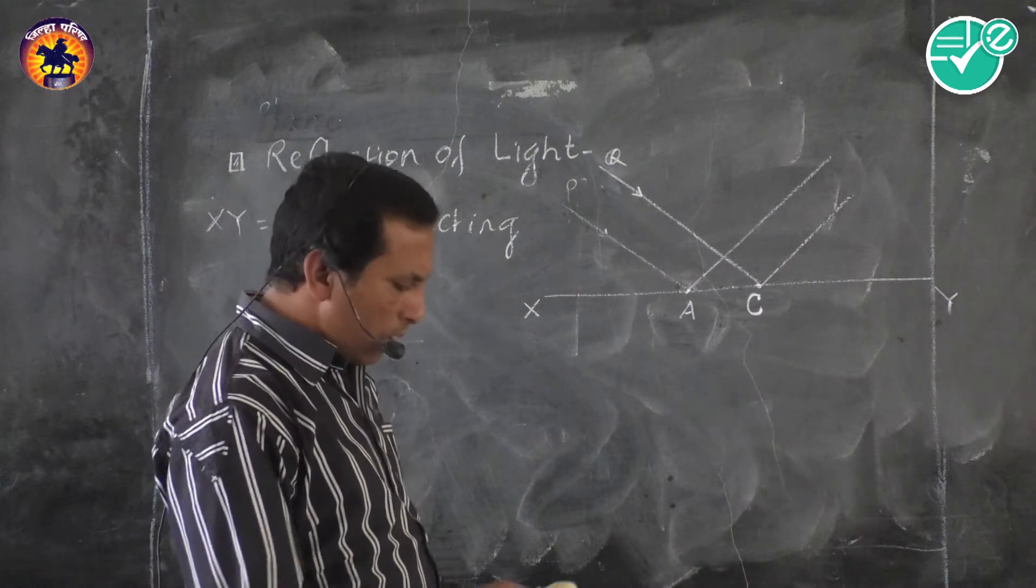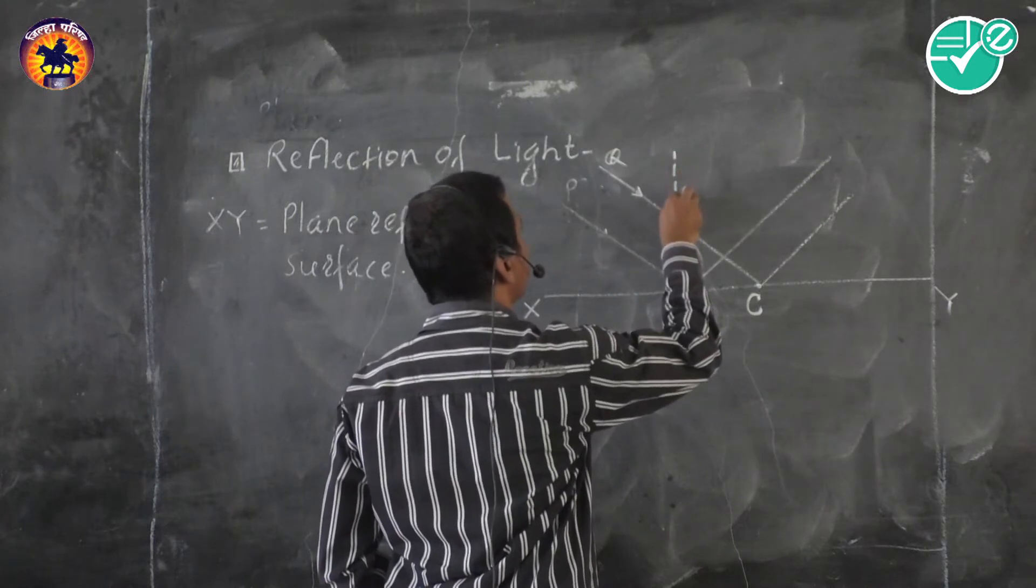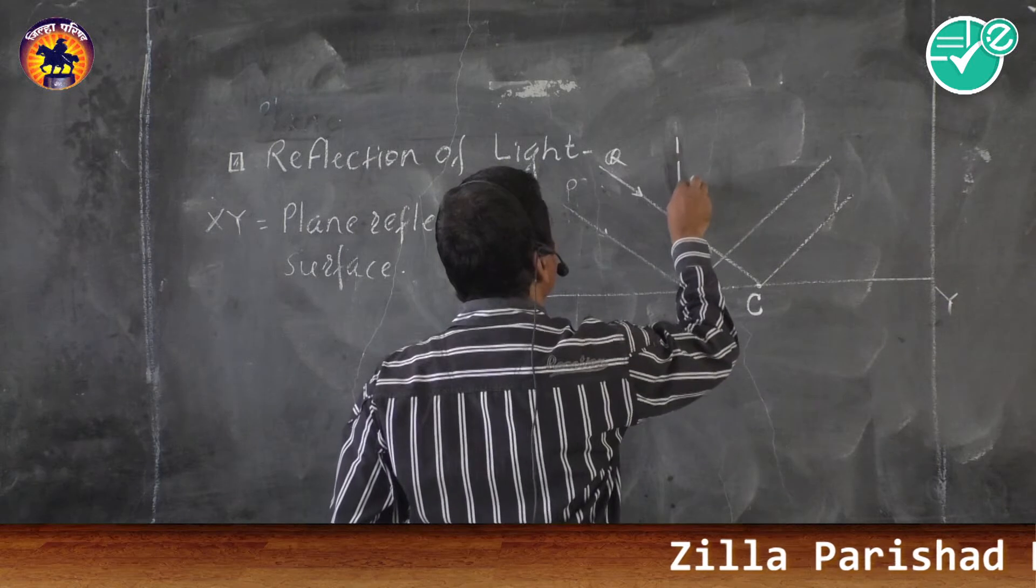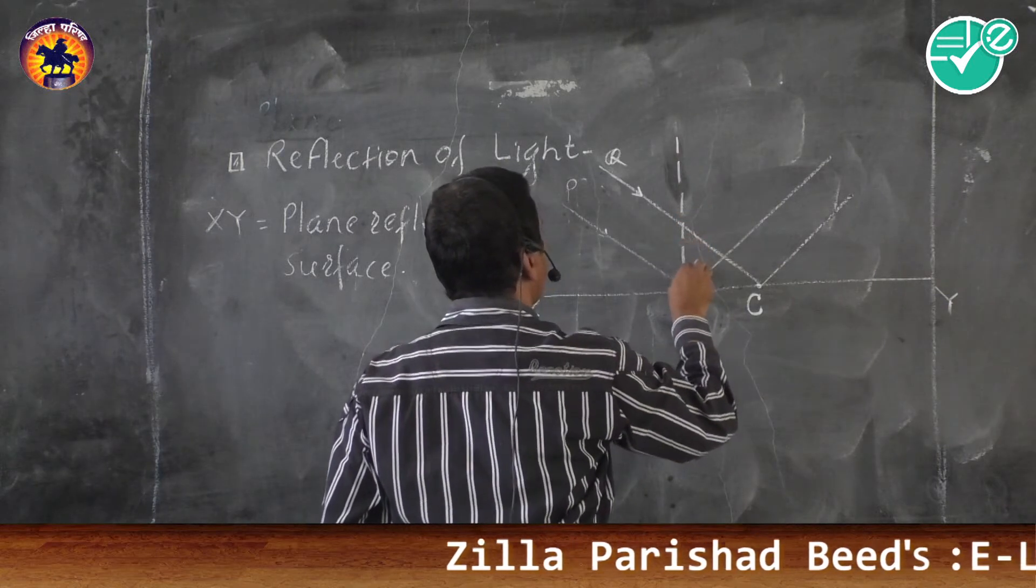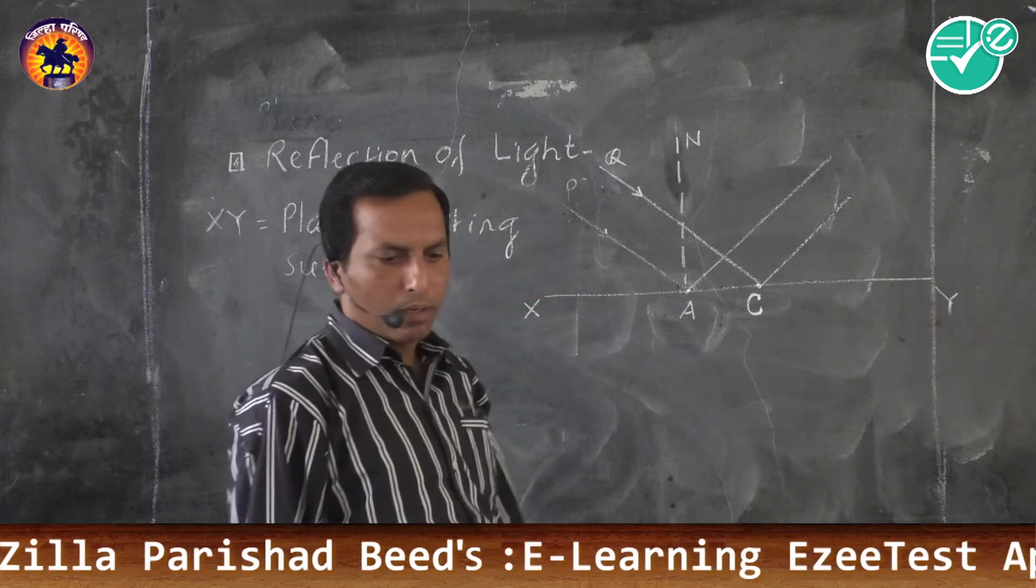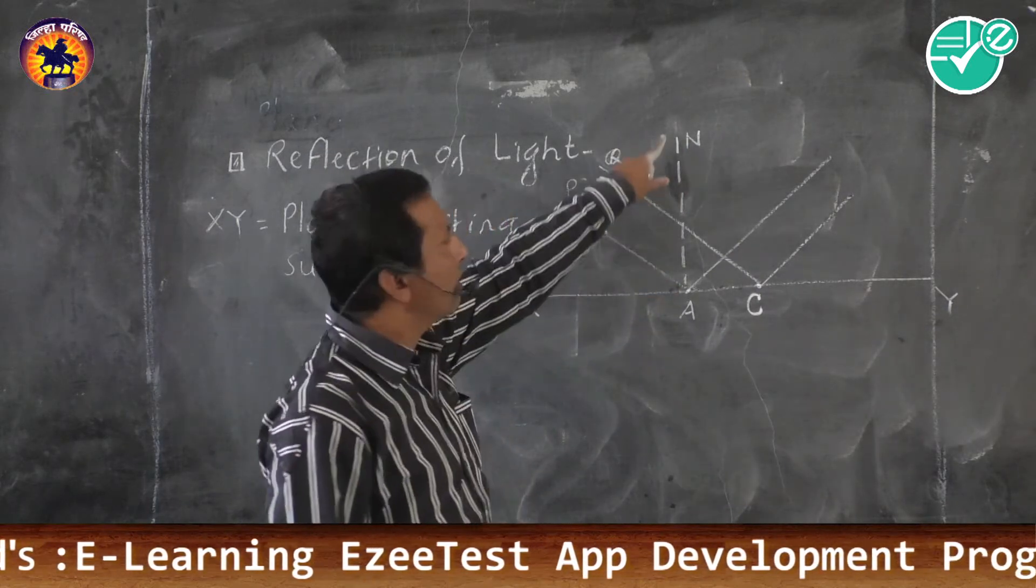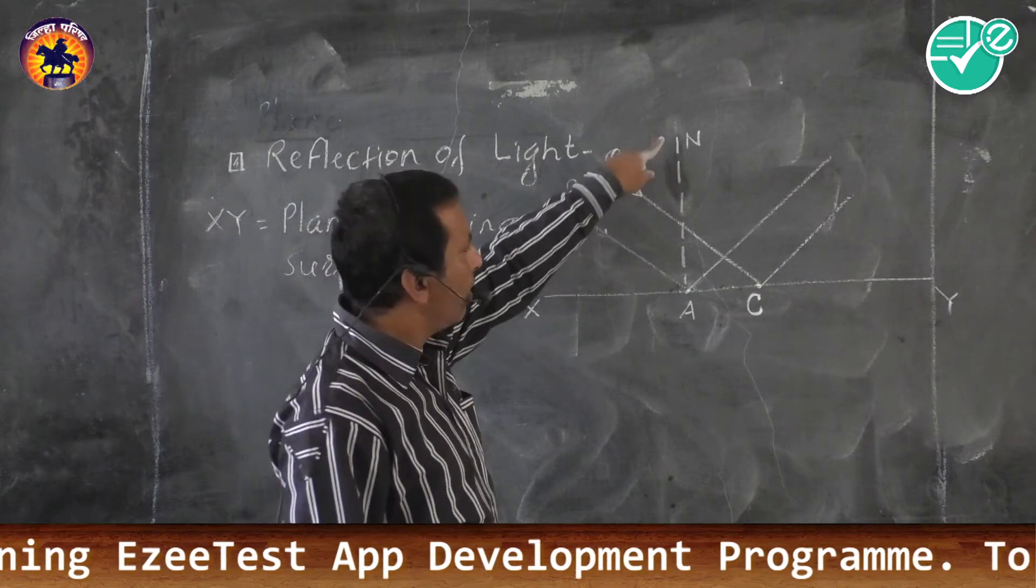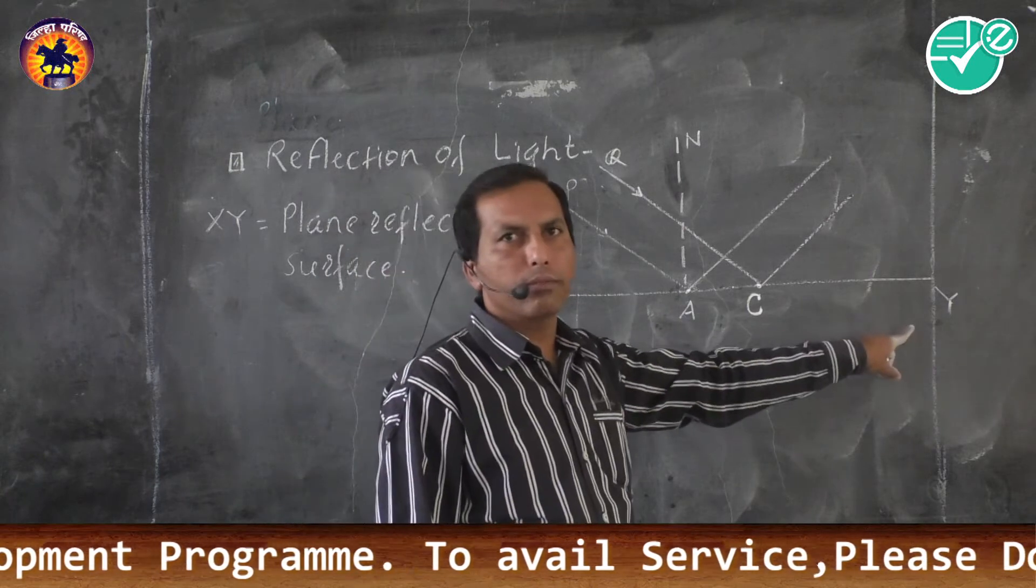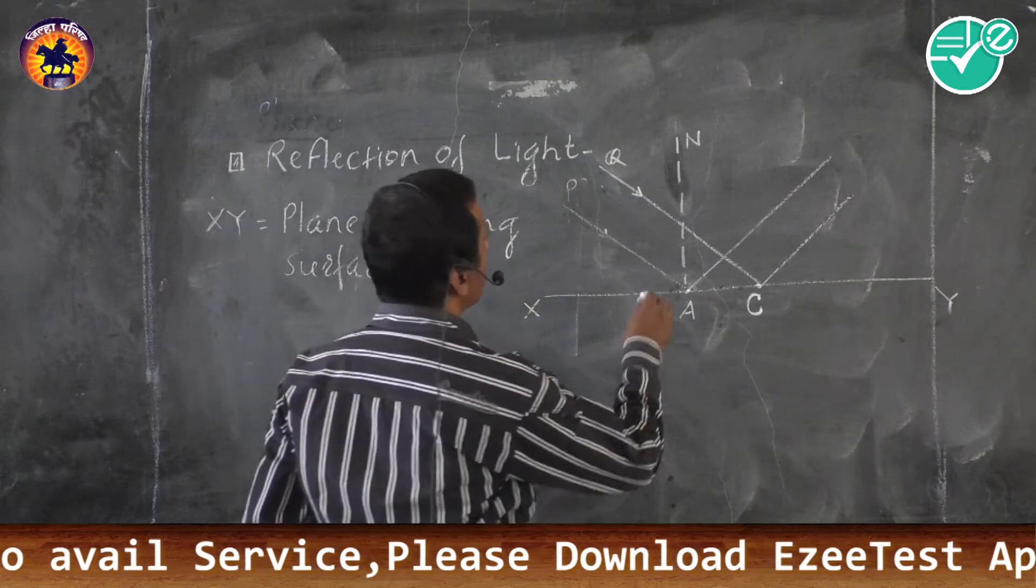So let us draw a normal at point A. Suppose NA. What is NA? NA is the normal drawn at point A on the plane reflecting surface XY. We know about this.